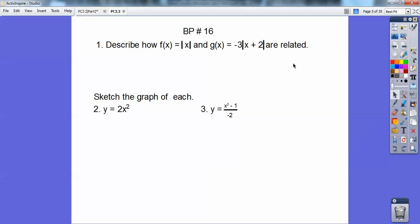Alright, so f of x is a v-shape coming out of the origin right there. And then g of x, this negative 3 is going to make it reflect over the x-axis. This plus 2 is going to make it go to the left, two units right here. And this 3 right here is going to make it skinnier. Instead of going over 1, down 1, it's going to go over 3, down 3.